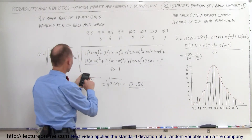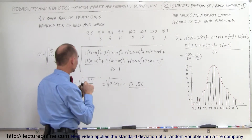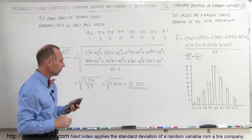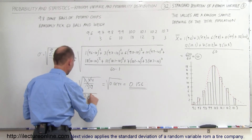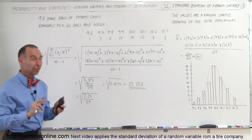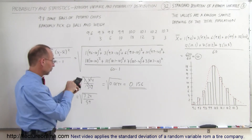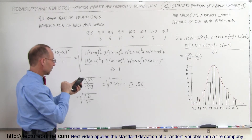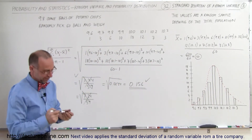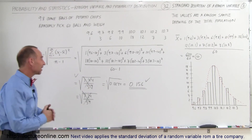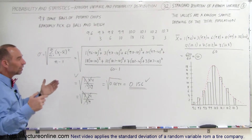Let me check this one more time to make sure it's correct. After redoing the calculation a third time to confirm, the result is verified at 0.156 ounces. Sometimes you have to do it three times just to make sure you get the correct value, because it's easy to make a mistake on a single button press.